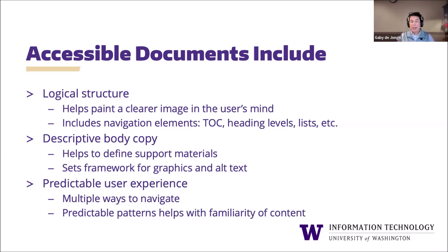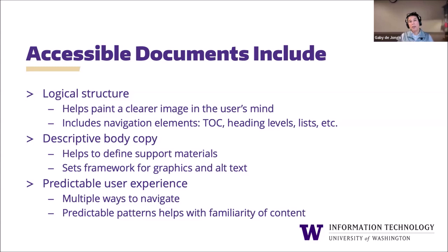Many accessibility standards relate to content styling and layout, and for document accessibility, logical structure really helps paint a clearer picture in the user's mind. This can be achieved by using navigation elements like a table of contents, heading levels, and lists — those provide structure as well. Descriptive body copy is sometimes overlooked but plays a significant role in accessibility. The content you are providing should describe any supporting materials such as complex diagrams or charts.